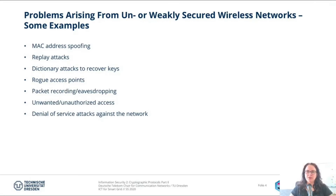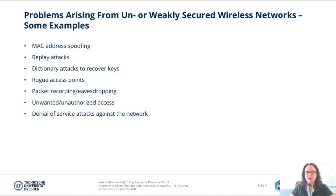Well-known attacks in unsecured or weakly secured wireless networks include MAC address spoofing, where a client uses a MAC address that is not his own to connect to the network. It's pretty simple to alter the MAC address of a device — it is done in software — and this is a kind of impersonation attack that may lead to violation of the CIA triad protection goals: confidentiality and integrity. Replay attacks are a form of network attack in which a valid data transmission is maliciously repeated or delayed. Dictionary attacks are mainly used to recover encryption keys or passwords, for example your Wi-Fi password.